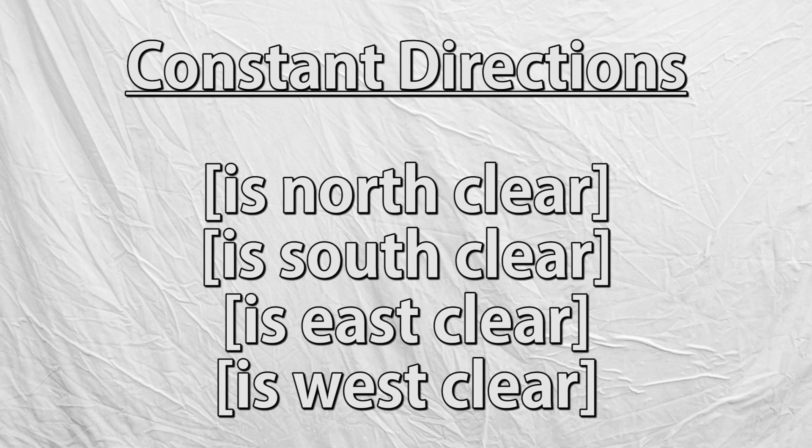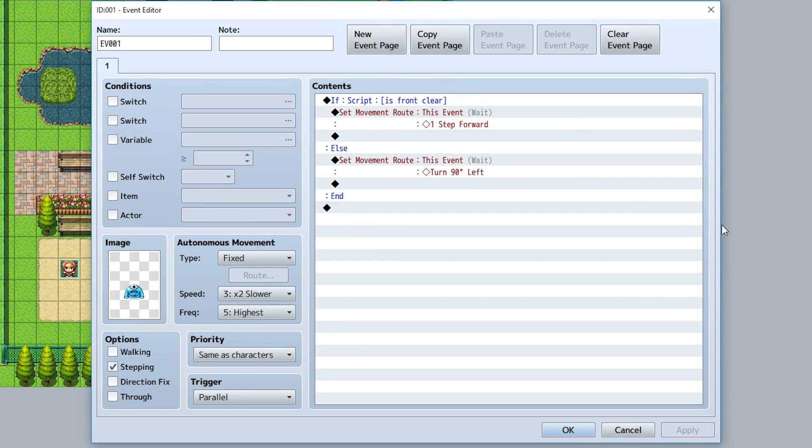On the other hand, if you wish to check a constant position such as north, south, east, or west, you can do so by using 'is north clear', 'is south clear', 'is east clear', or 'is west clear', which correspond to the north, south, east, and west positions of the event regardless of which direction it's looking.